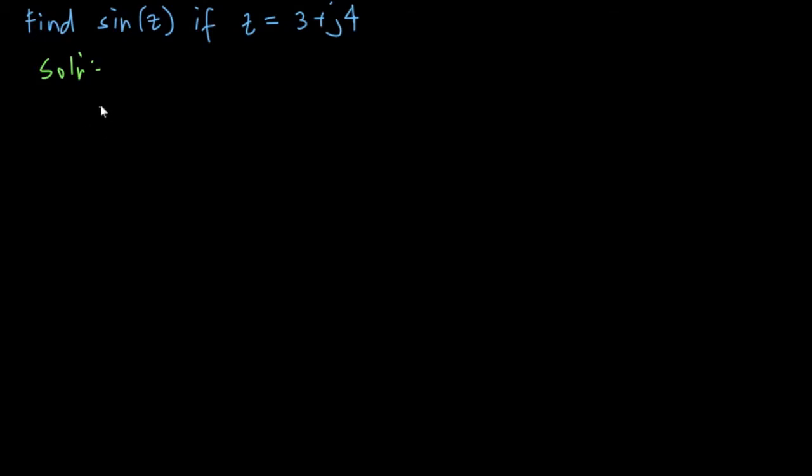So we have sin z is equal to sin x hyperbolic cos y plus j cos x hyperbolic sin y. So from our given, z is equal to 3 plus j of 4. Our x, the real part, is 3 and the imaginary part is 4 which is the y.